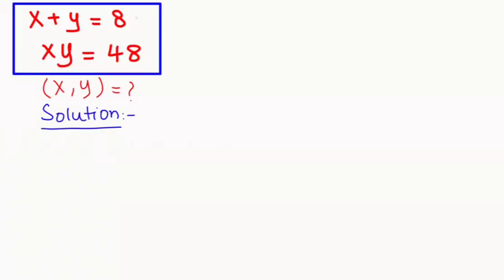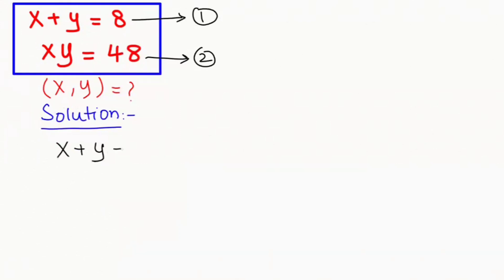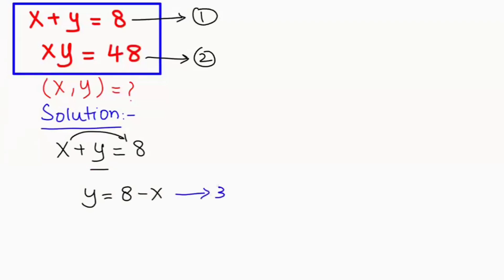First I am going to name this equation as 1 and this as 2. In the first step I am going to take equation 1 and solve it out for y. Taking x to the right hand side, y is equals to 8 minus x. This is our equation 3.